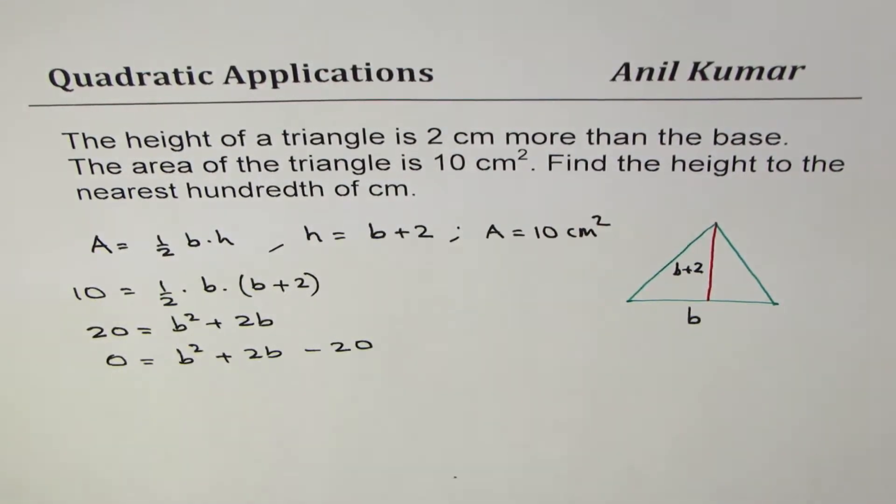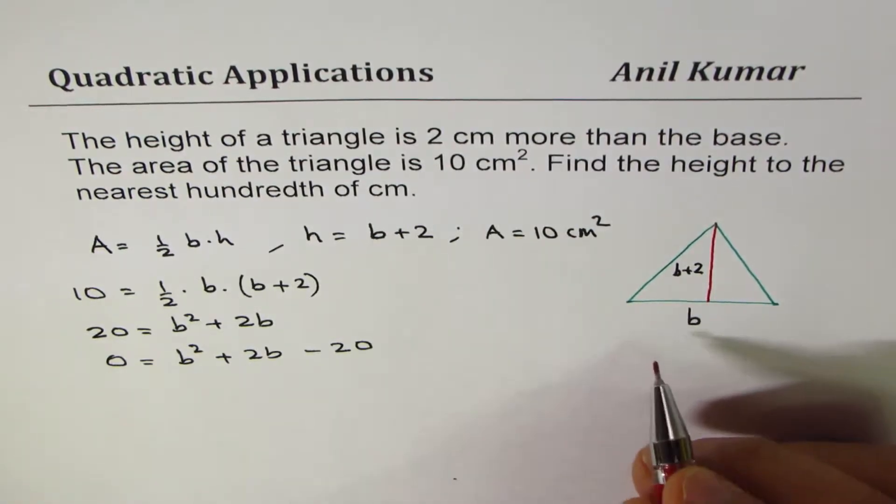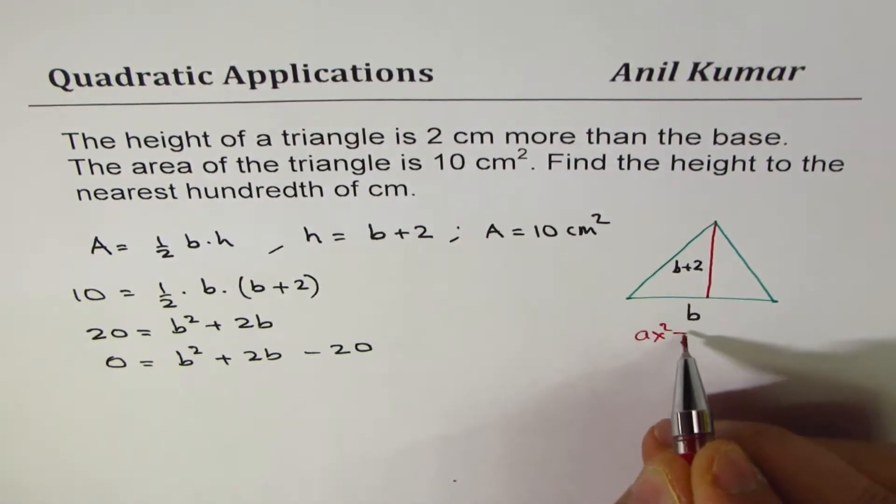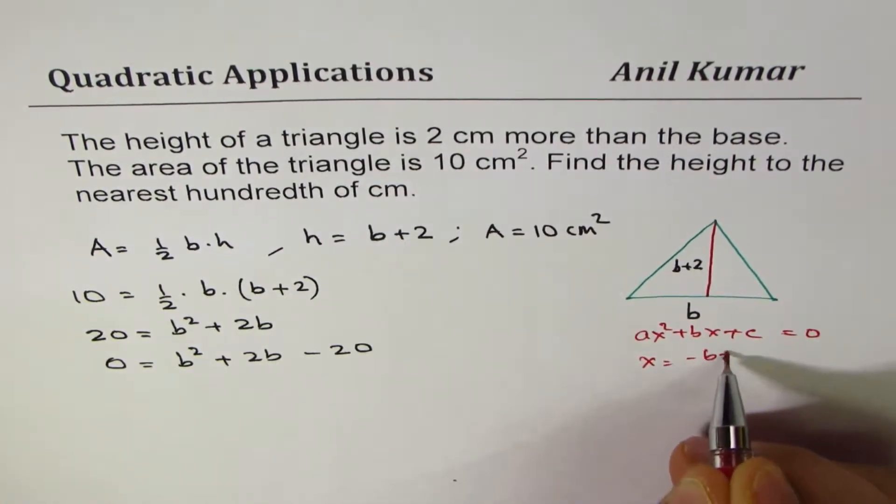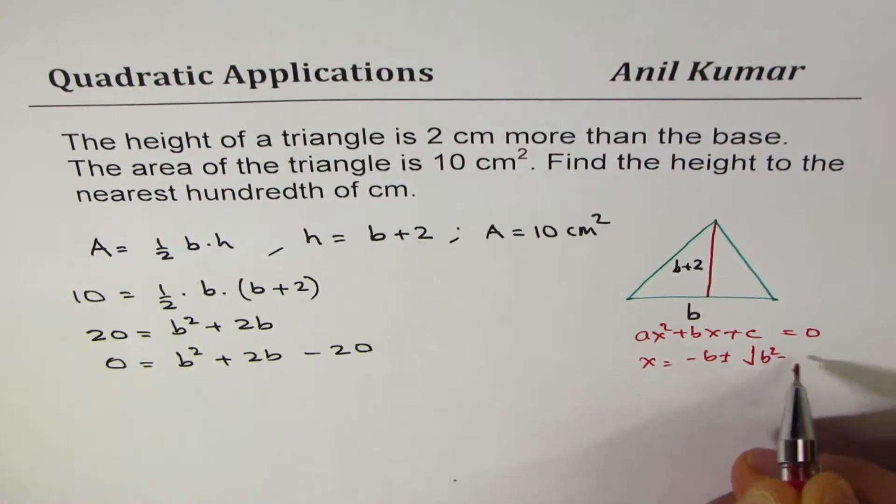Now to find the value of b we can use the quadratic formula which is: if the equation is ax square plus bx plus c equals 0, then x is minus b plus minus square root of b square minus 4ac divided by 2a.